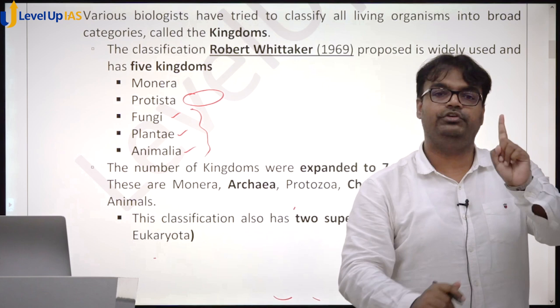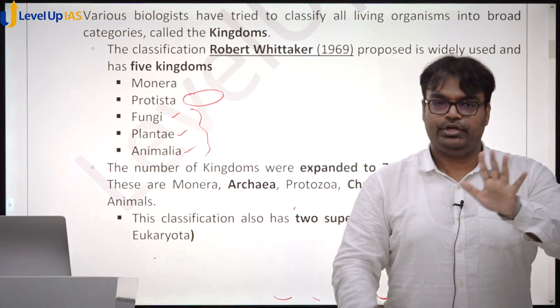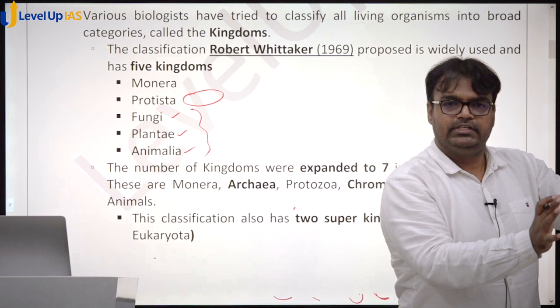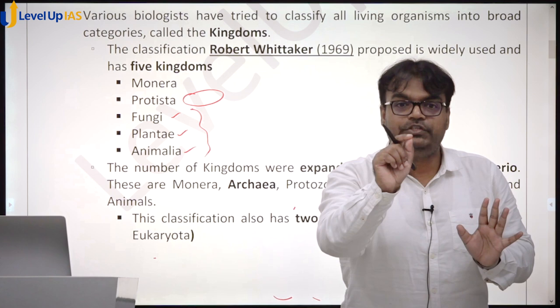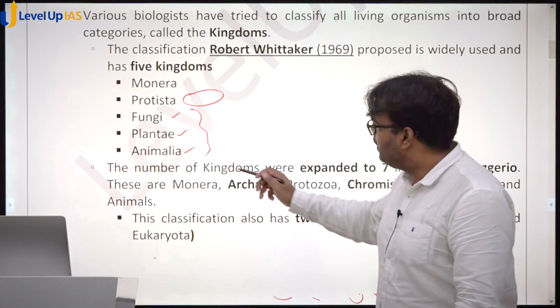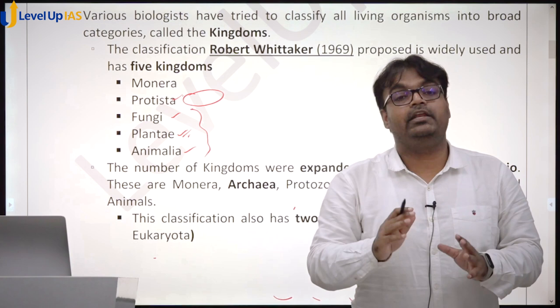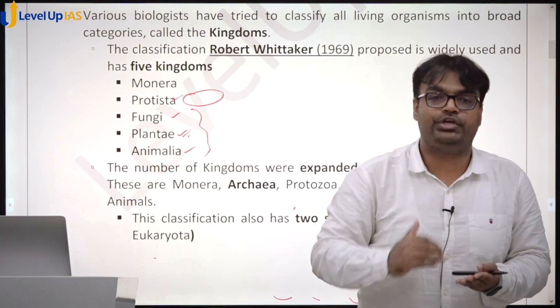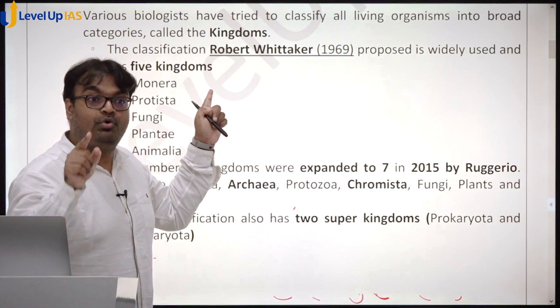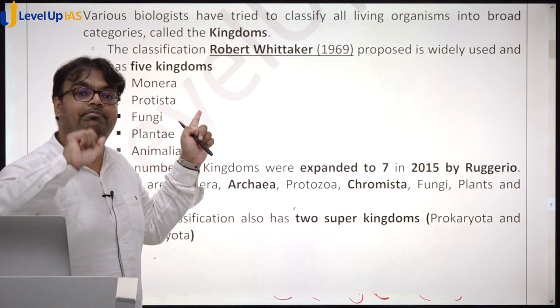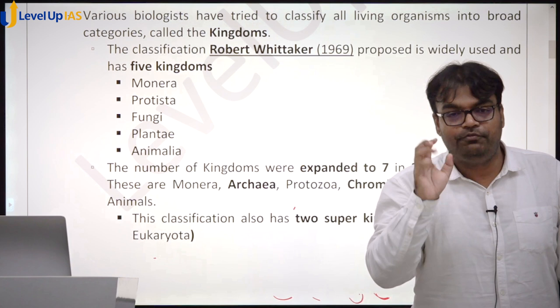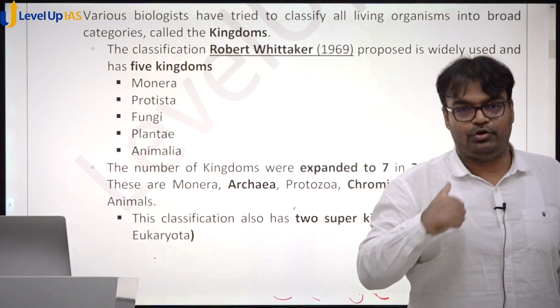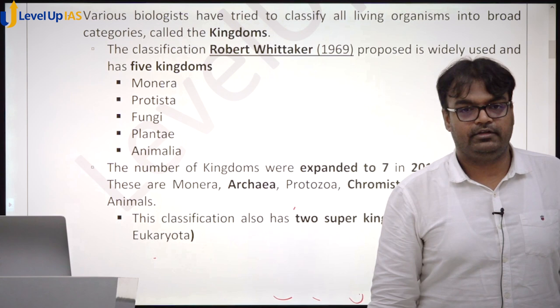In Monera we have mostly all prokaryotic species, which are always single-celled. In Protista we have mostly single-cell eukaryotes — eukaryotic species which are single-celled. For example, amoeba, which all of us drew in class 9 or class 10: it is a single cell but if you remember you also drew organelles inside the cell, making it a eukaryotic species. It will go into Protista.